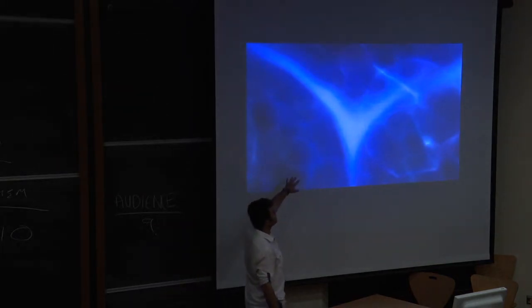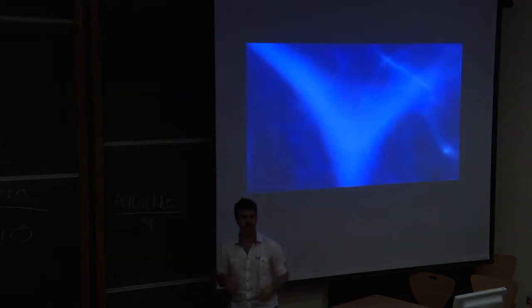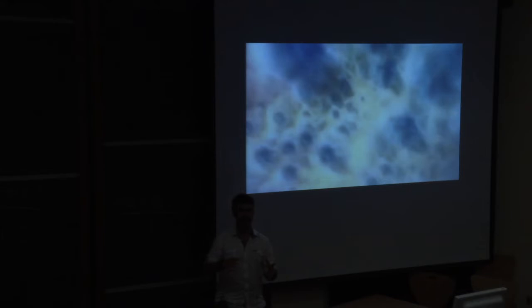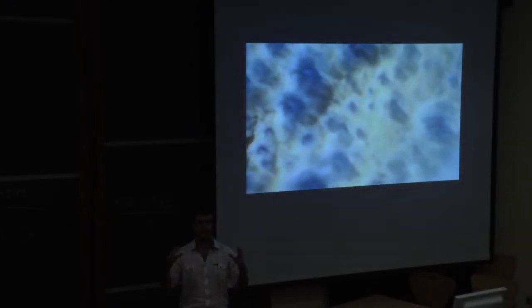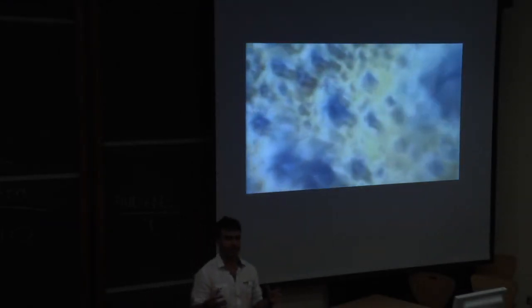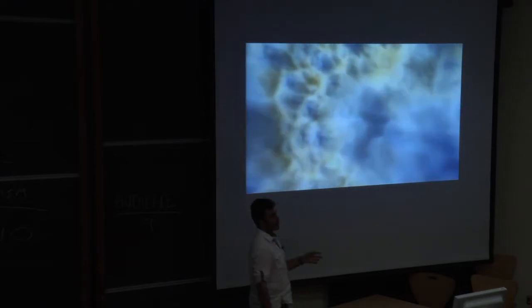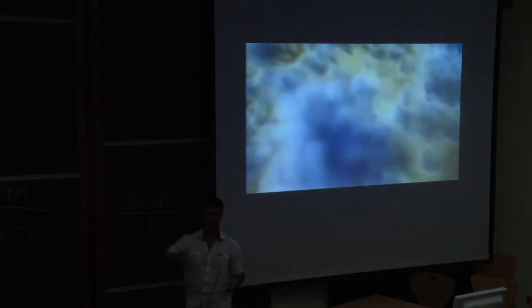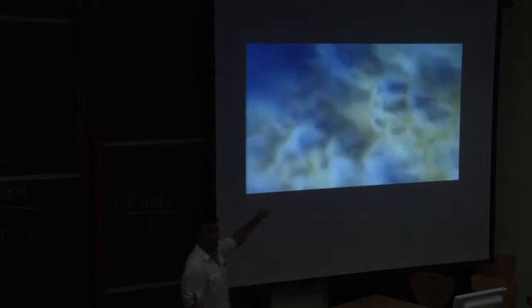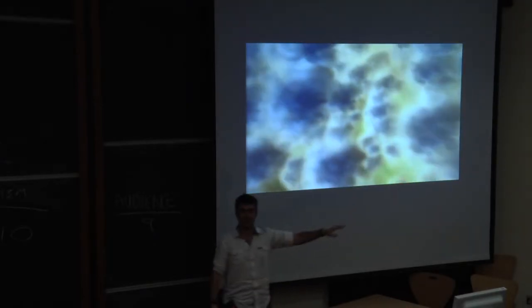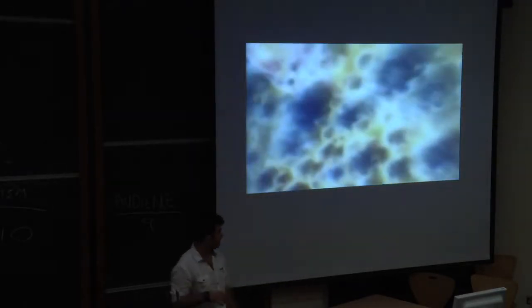It is in these very dense regions where filaments connect that we reach the next step of complexity. Normal matter falls into these nodes and forms giant, massive clouds of gas that are extremely cold — we're talking about minus 200 degrees, which is fairly cold for the universe compared to previous temperatures.